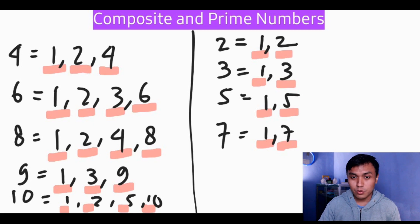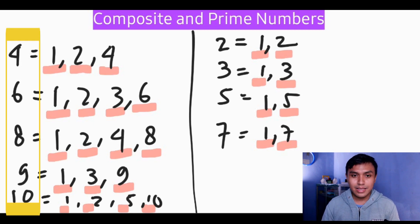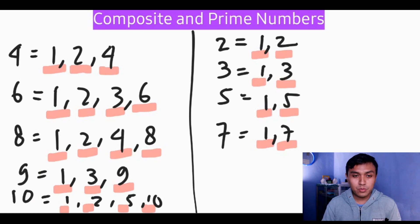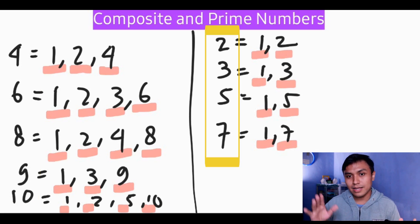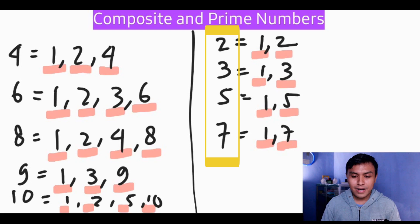The composite numbers between one and ten are four, six, eight, nine, and ten. The prime numbers between one and ten are two, three, five, and seven. That's all for today — thank you very much, see you in the next video!